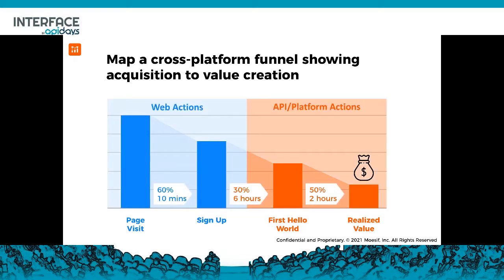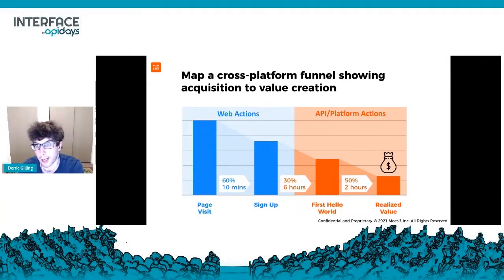This is a cross-platform funnel. On the blue side you see web actions, which might be tracked through a web analytics platform such as Amplitude or Segment. On the other side is the API platform. It's really important to tie these two things together and have a good attribution model, because you might have one developer sign up and explore your documentation, but they pass that off to someone else who does the actual integration or implementation.